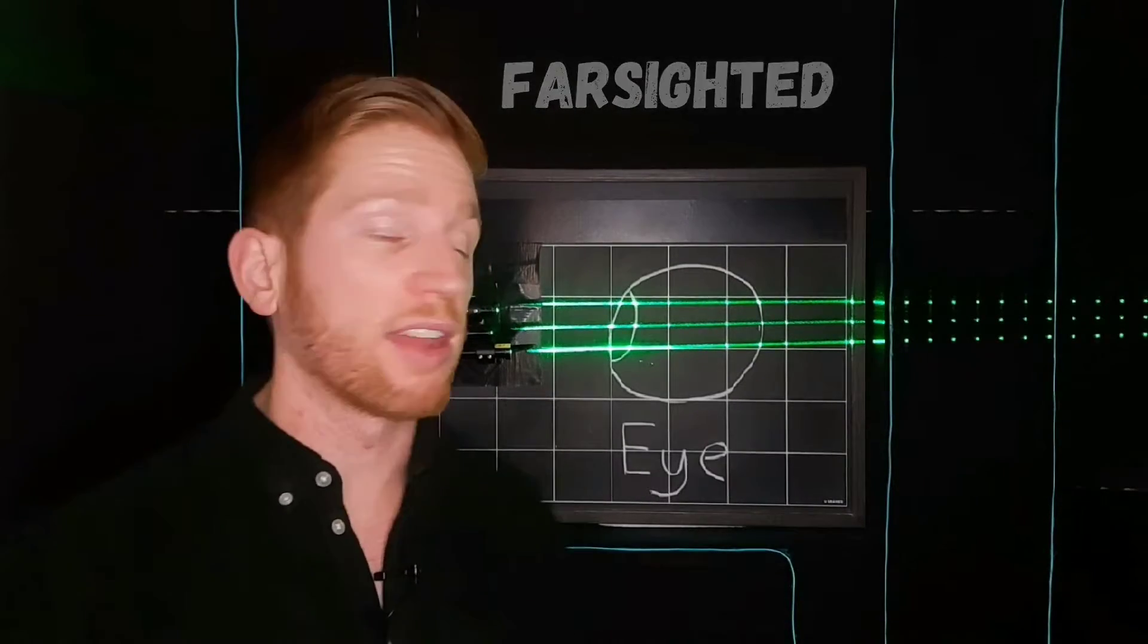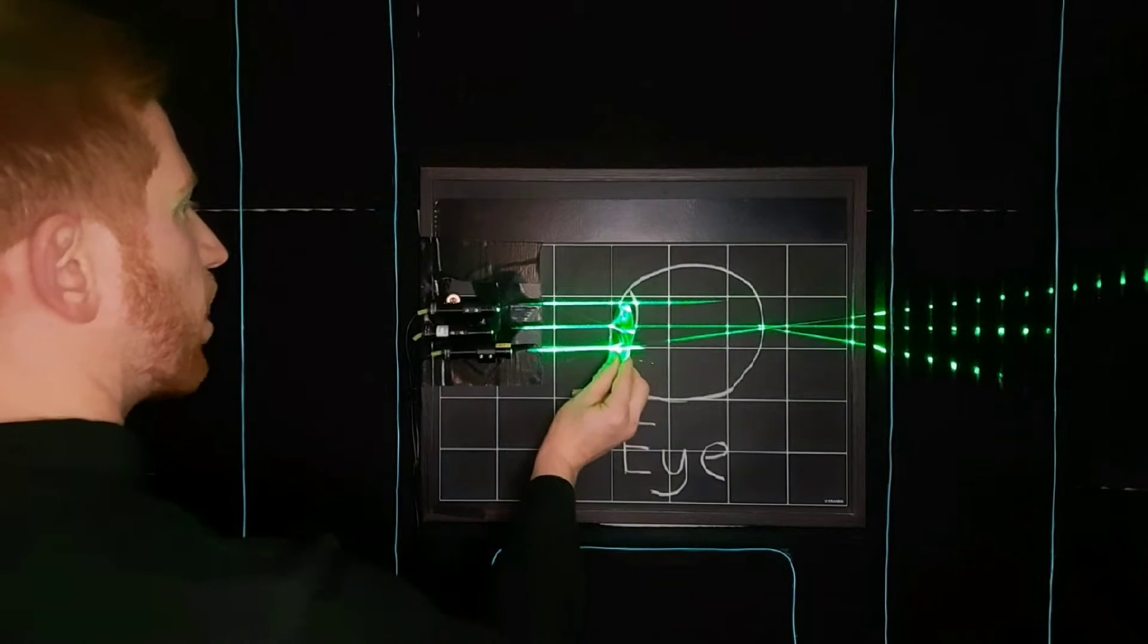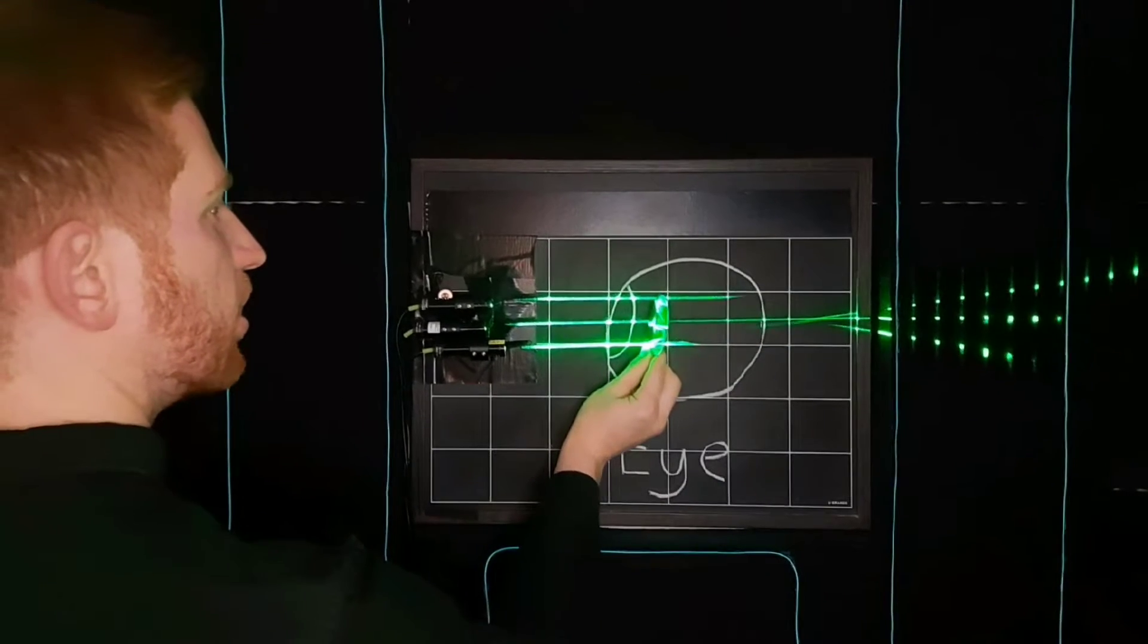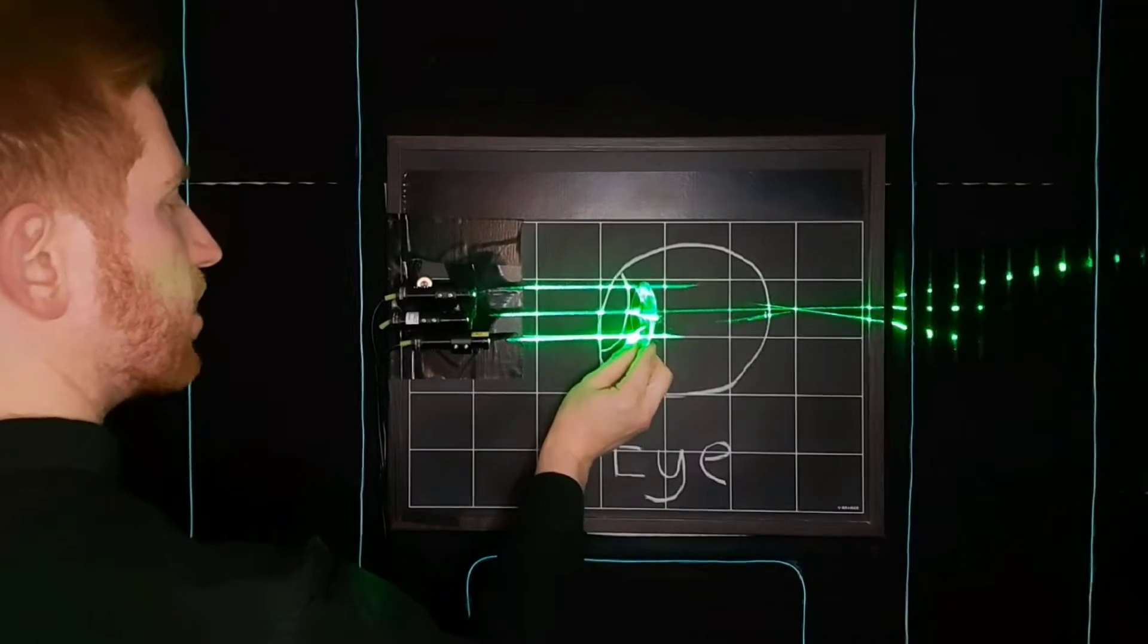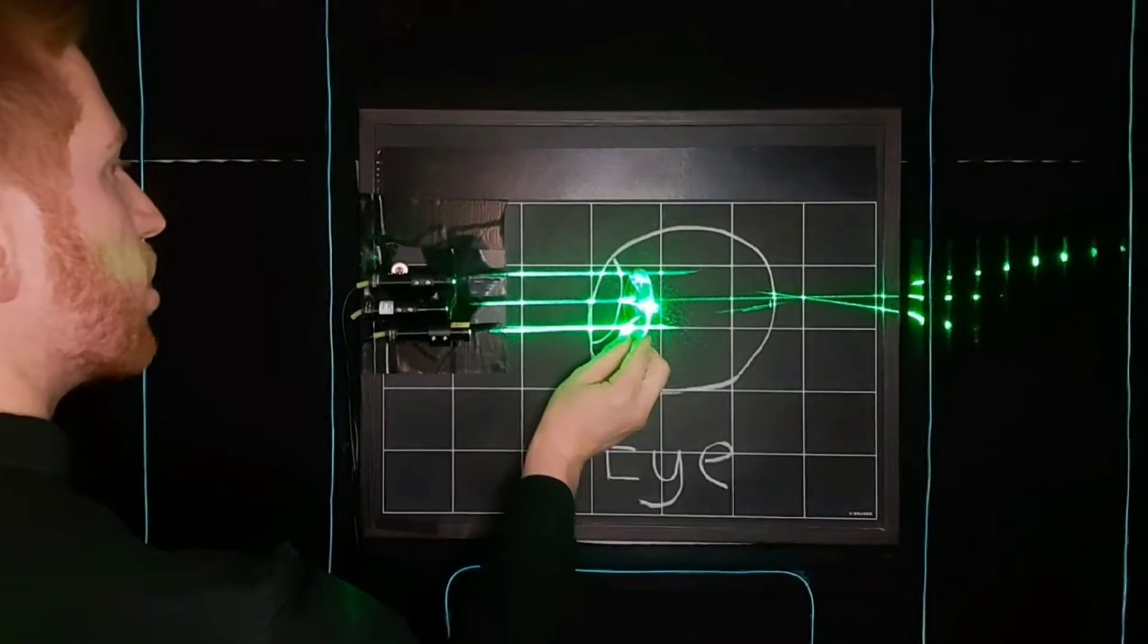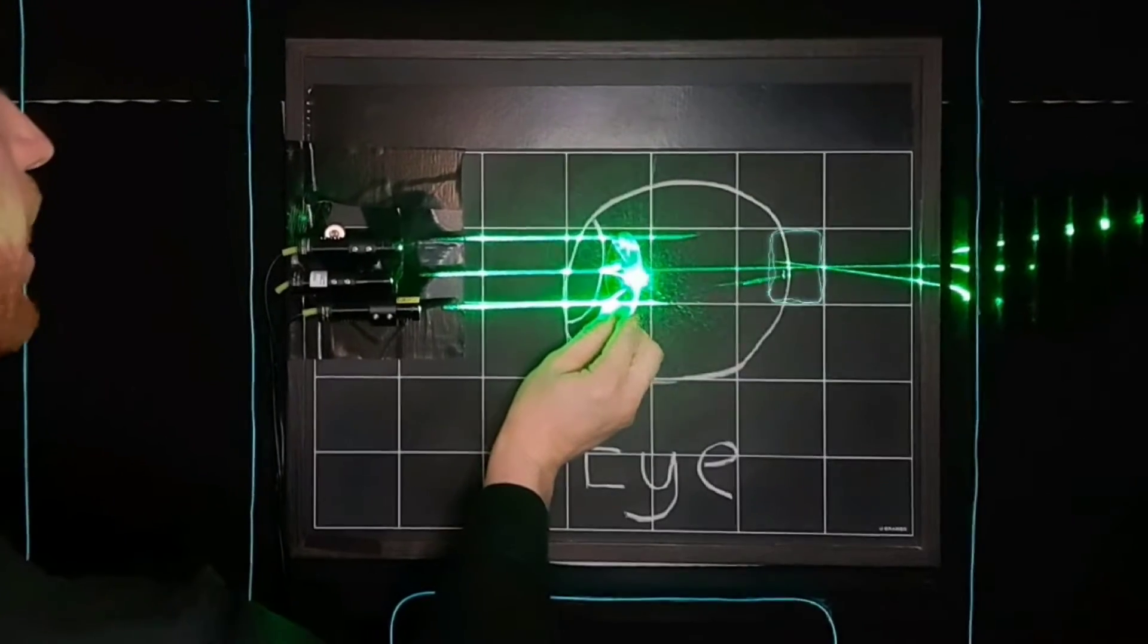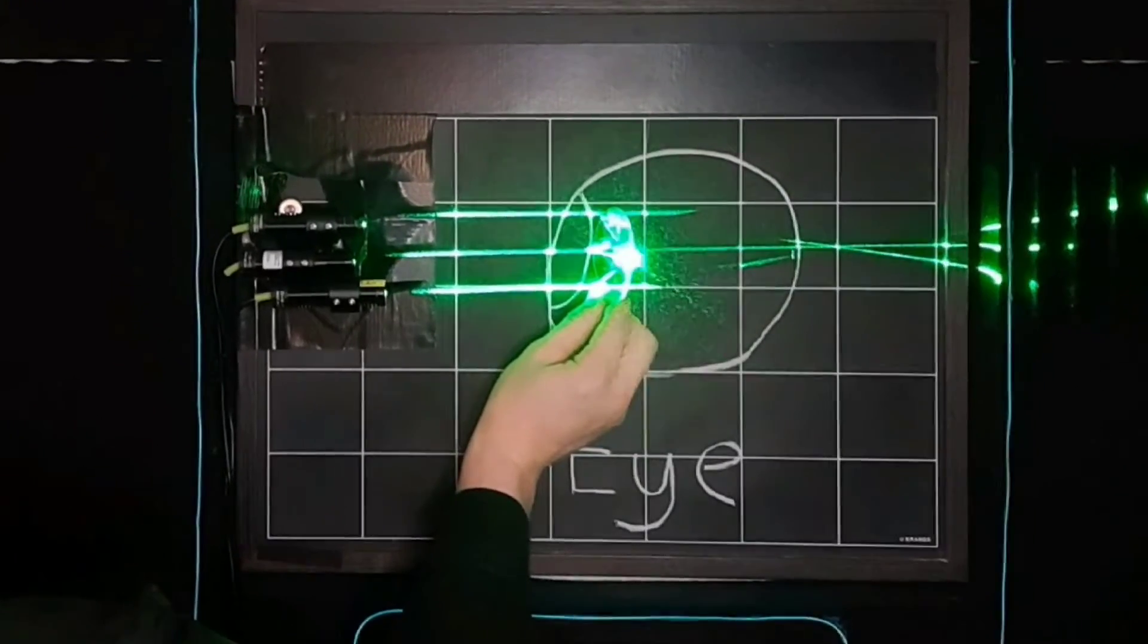Being farsighted is just the opposite of that. Instead of focusing the light right onto your retina or focusing it too soon, if you're farsighted, your eye is trying to focus that light too late. So it's actually hitting your retina before it comes to a point of focus, and again, those lines have spread out and your vision becomes a little bit more blurry.